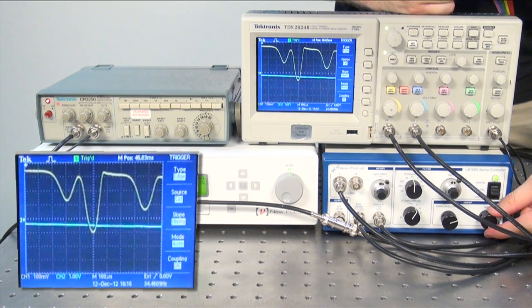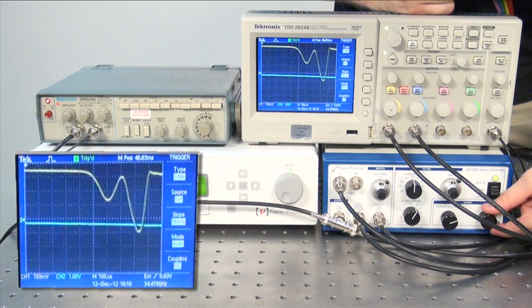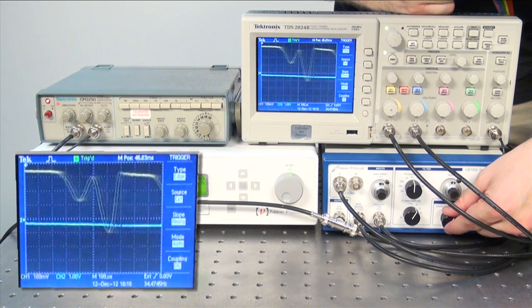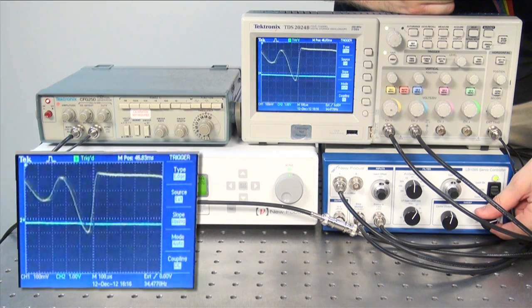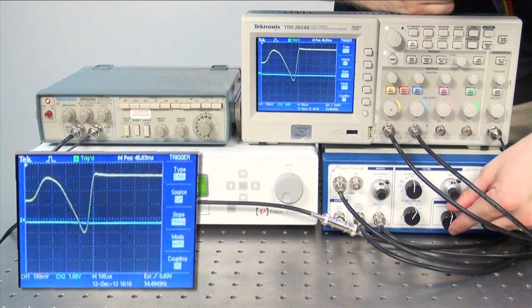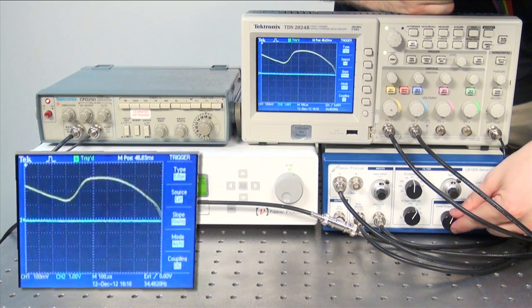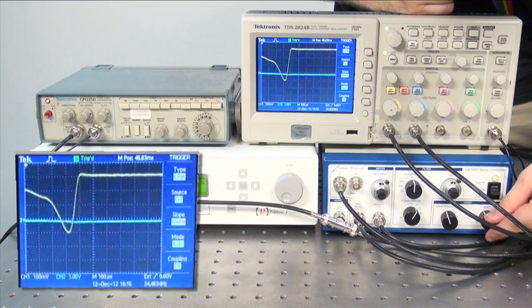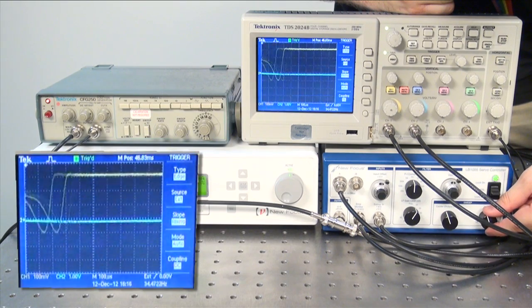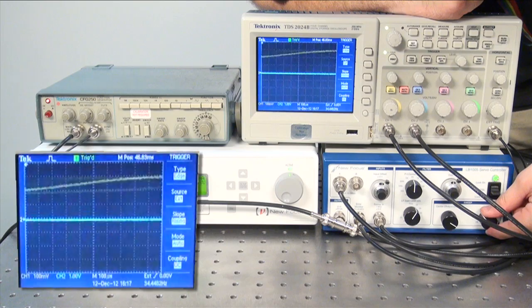The next step will be to slowly lower your span knob while recentering with the center knob until the absorption line covers the entire screen. You will turn your span completely off.